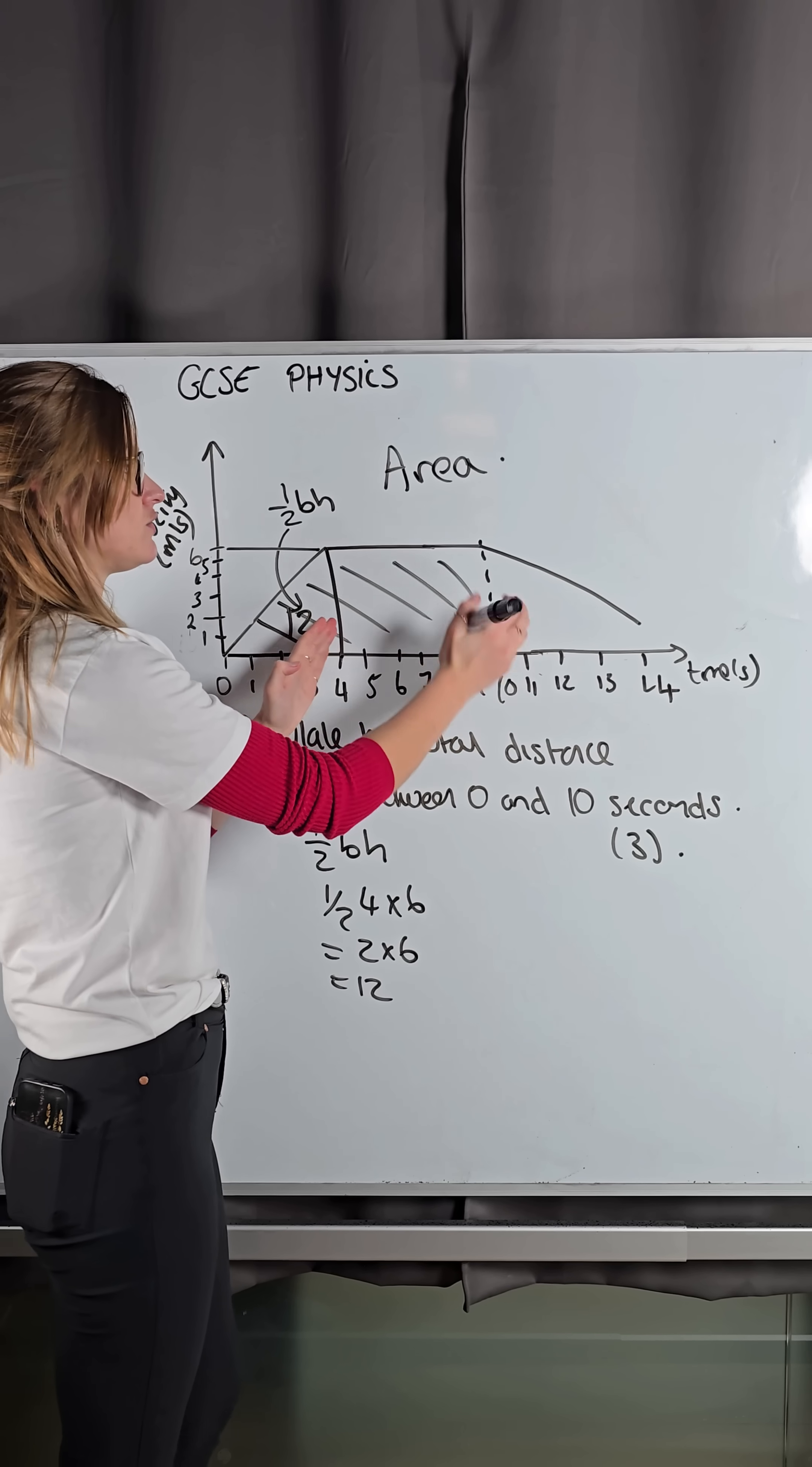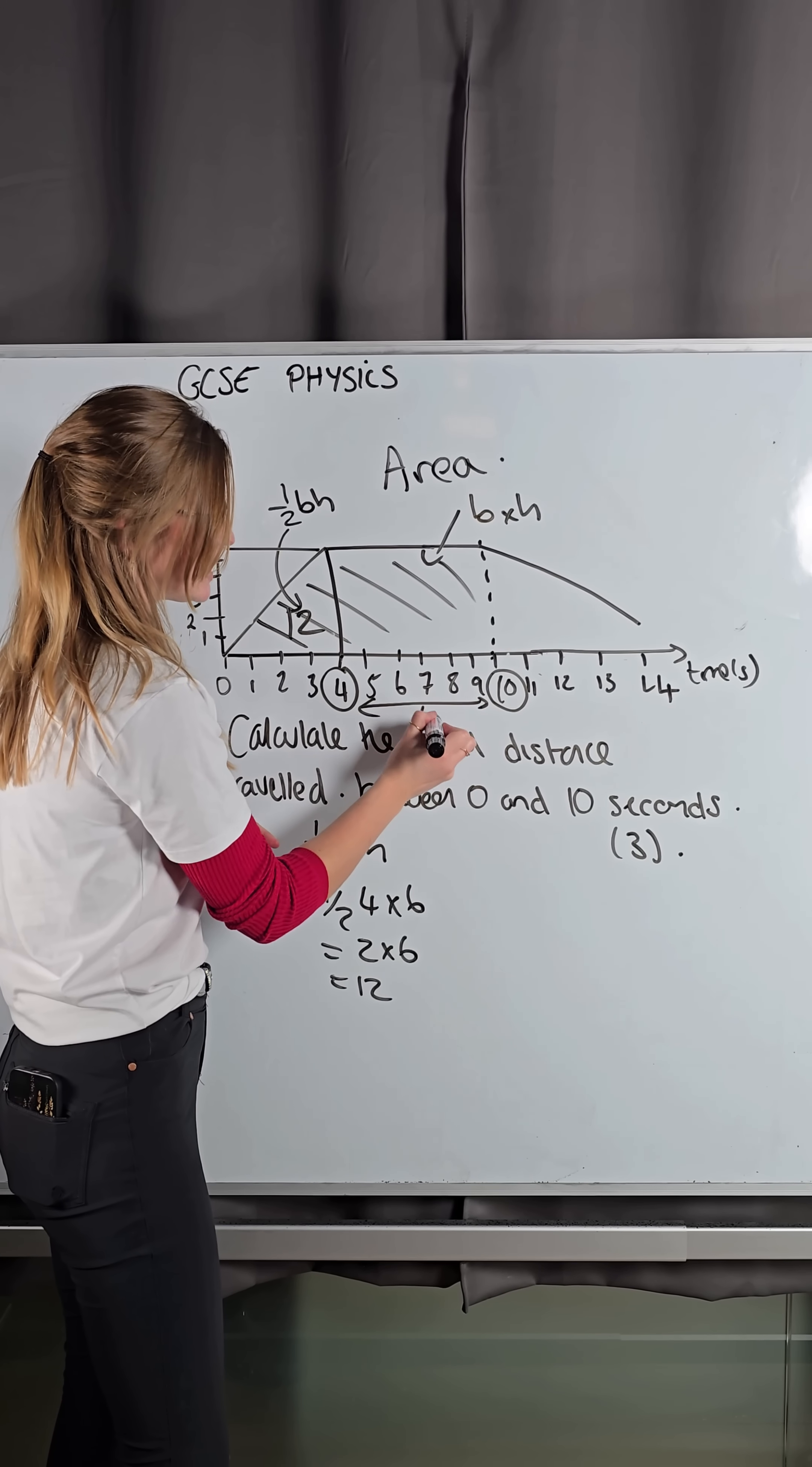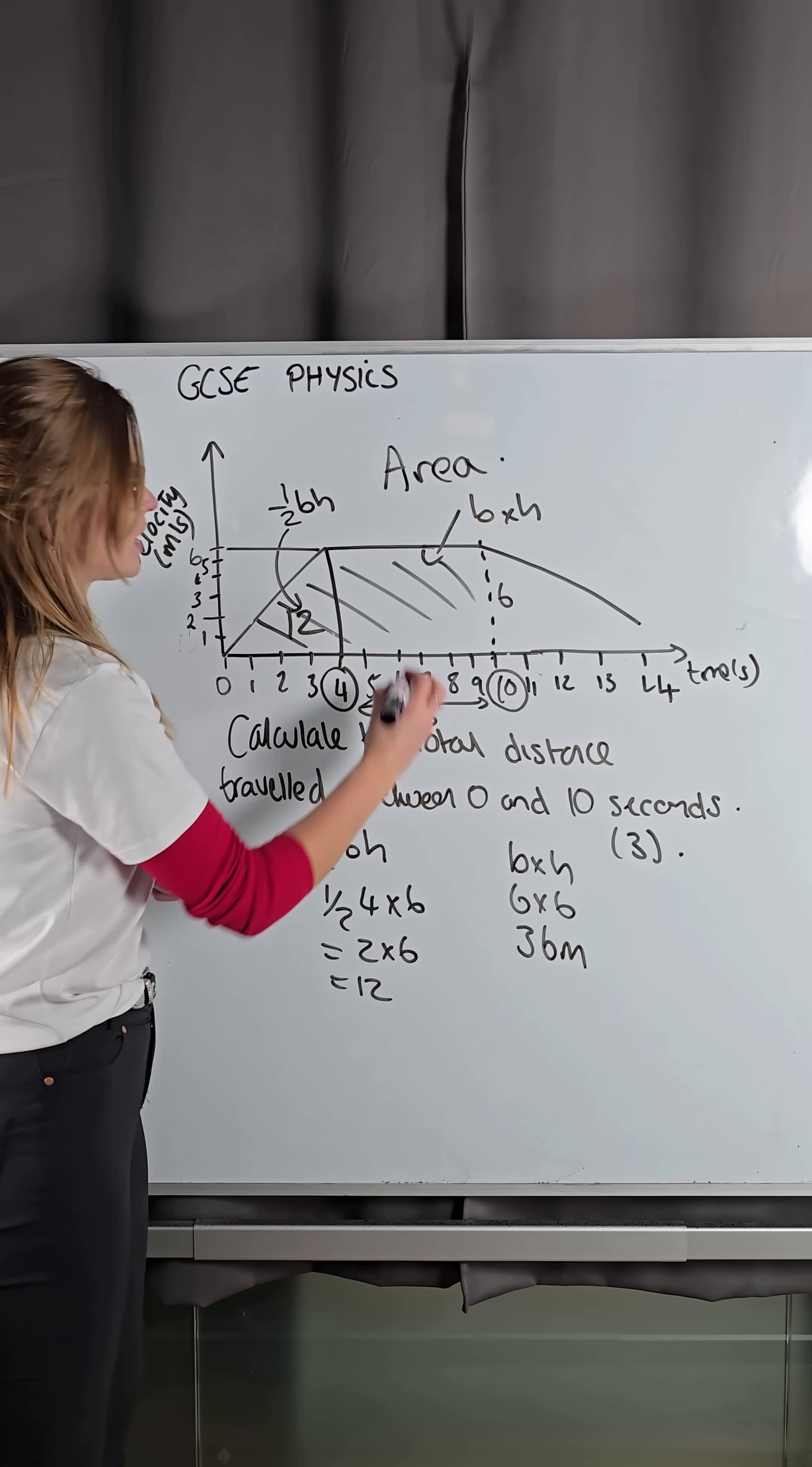Now, here I've got a rectangle. To find the area of a rectangle, we do the base times the height. So the base, now it starts at 4 and it ends at 10. Now, the base isn't 10. If it starts at 4 and it ends at 10, the base there is going to be 6. And the height is 6. So what I'm going to do then is the base times the height is going to be my 6 times my 6 to give me 36 meters. So the area here is 36.